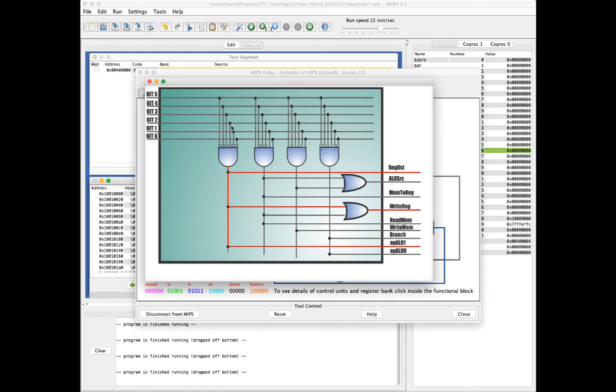Notice that this first AND gate here has every input inverted, so an input of all zeros would make this line 1. Here 1s are indicated by red, so you can see how the control signals are set to either 1 or 0 based on the instruction type.